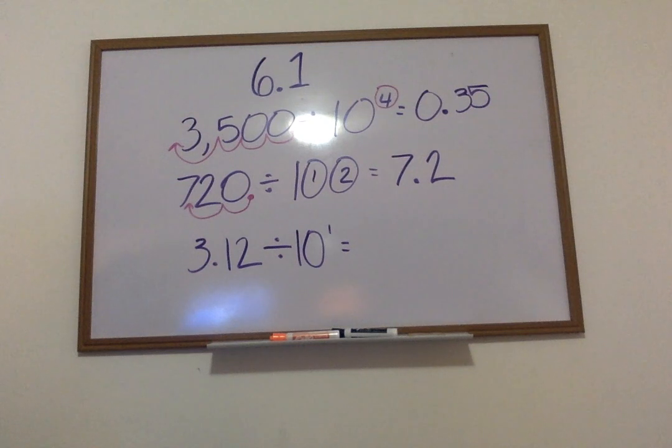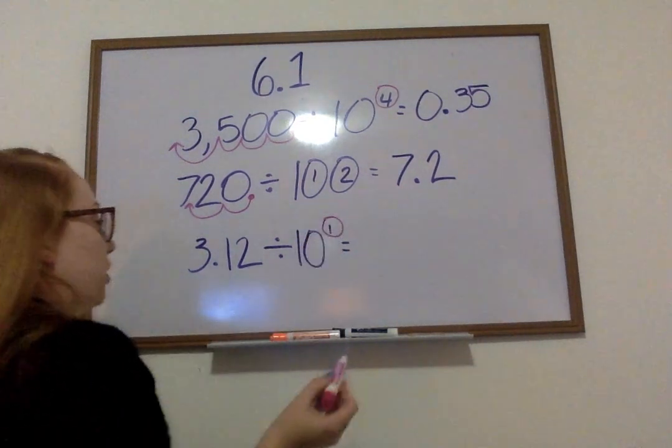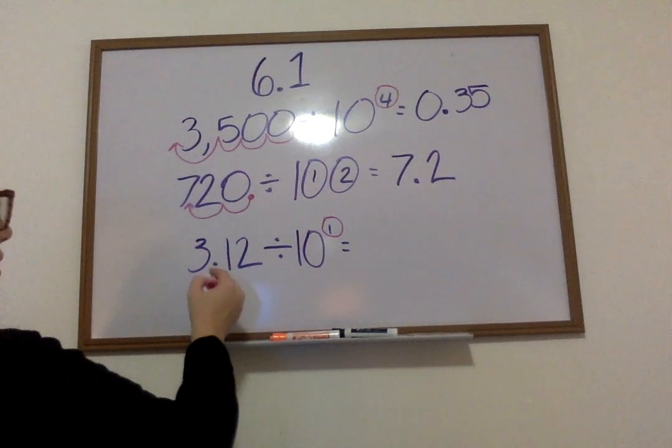It's going to go, the decimal is going to go to the left one time because there's a one right here. My decimal this time is not invisible. It clearly can be seen right here.